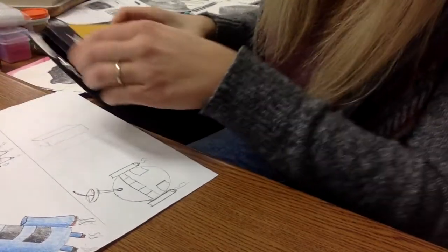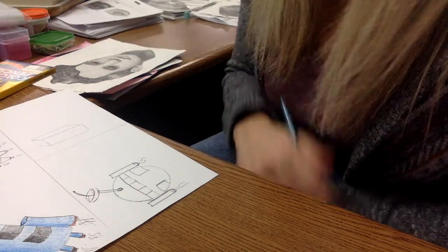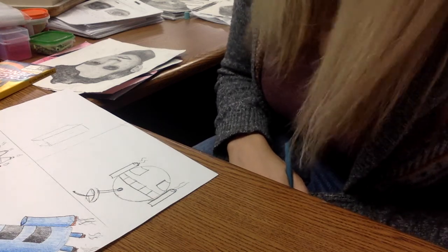First thing you want to do when you start shading with colored pencil is think about one of the main colors you want to use and think about where your light source is. Think about where your light source is.